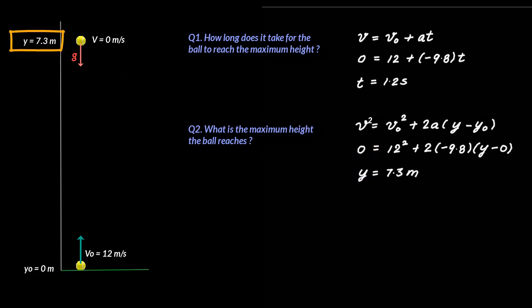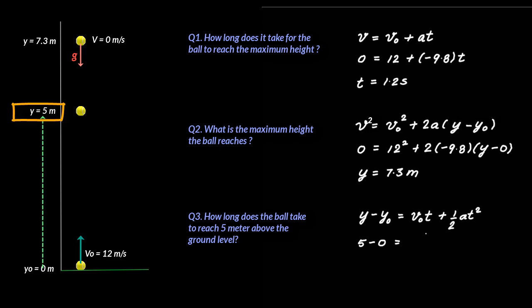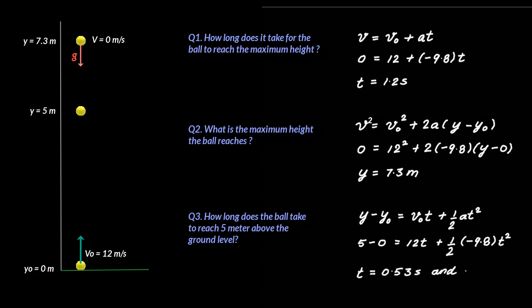The next question is: how long does the ball take to reach 5 meters above the ground? We use the equation y − y₀ = V₀t + ½at². Putting y₀ = 0, y = +5 meters, V₀ = +12 meters per second, and a = −9.8 meters per second squared, this is a quadratic equation and we get two values of t: 0.53 seconds and 1.9 seconds.